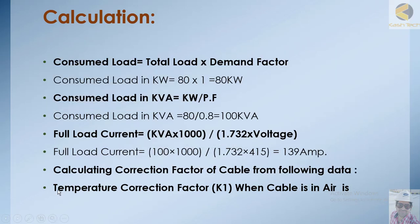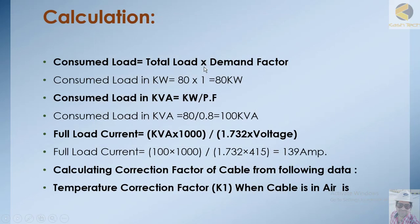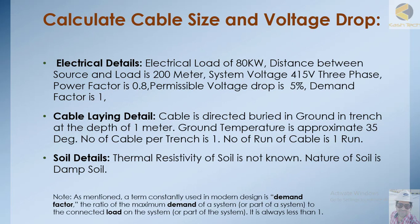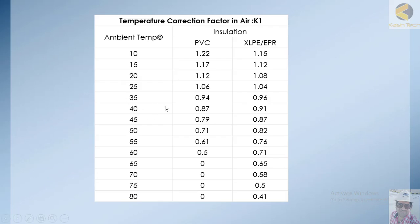Now let's look at the temperature correction factor K1. From the table, if the ambient temperature is 35 degrees and you are using PVC cable, you multiply the base current rating by 0.87. If you are using XLPE or EPR cable, you multiply by 0.91.